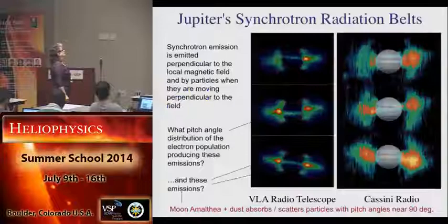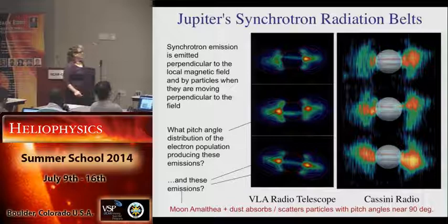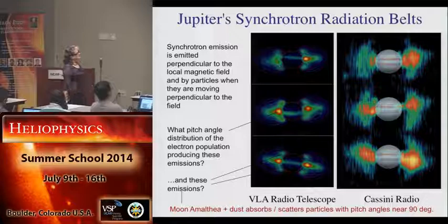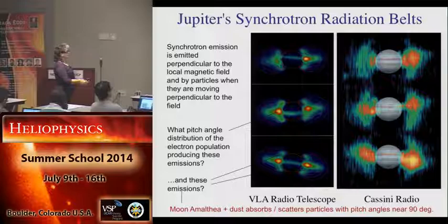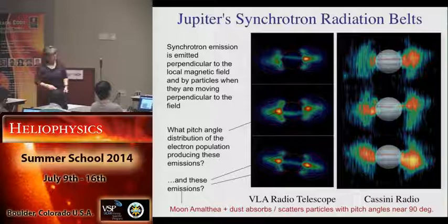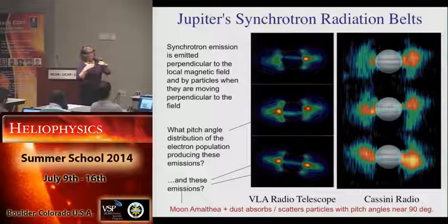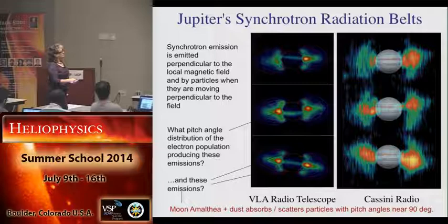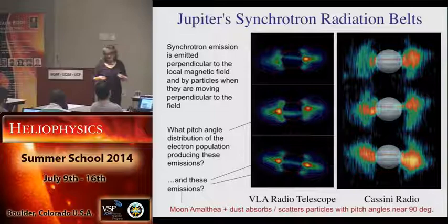We can also look at radio emission in various ways. This is the VLA radio telescope south of here, and this is the Cassini spacecraft on its way to Saturn making images of this radio emission at different wavelengths. What's interesting is that the pitch angle distribution of electrons is not just a simple distribution — we have two populations: ones highly confined to the equator with a pancake distribution, and others populated at high latitudes, where in fact the near-90-degree particles are removed because a moon absorbs them near the equator.